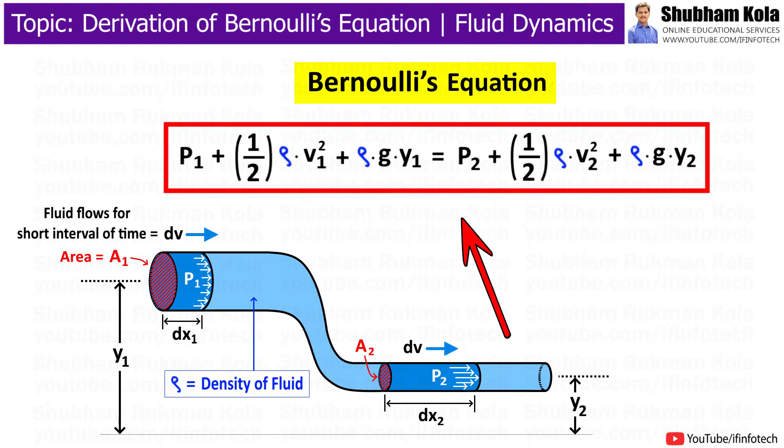Here is the formula, where p is the pressure exerted by fluid, v is the flow speed, and rho is the density of fluid, and y is the height from the ground.